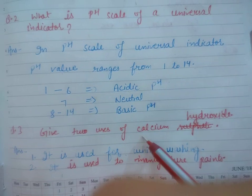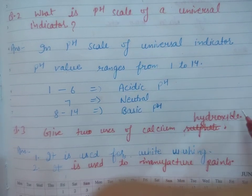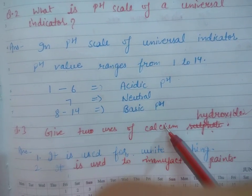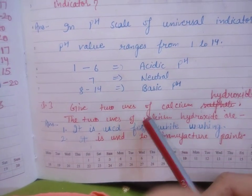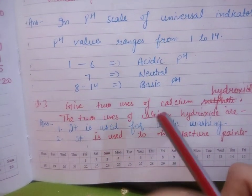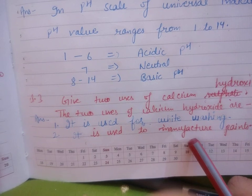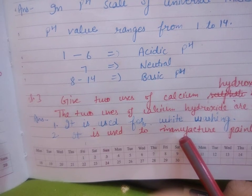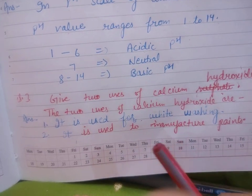Then third question: Give two uses of calcium sulfate is written in your book, but you have to cut calcium sulfate and correct it to calcium hydroxide. The two uses of calcium hydroxide are: first, it is used for whitewashing, and second, it is used to manufacture paint. It is also a substitute for cement. There are many more uses, but we have mentioned these.